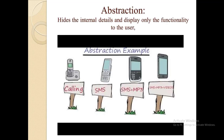Looking at abstraction in detail: abstraction hides the internal details and displays only the functionality to users. For example, on phones we usually make calls, send SMS, play audio and video. We perform different functions on the phone, but how it performs — what is the mechanism behind it — is never shown to a common normal user. Only the interface is shown; all the techniques, complexities, and technicalities are hidden from the user. This is known as abstraction.